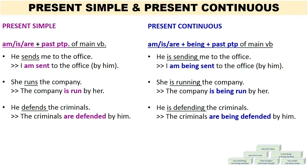Now let's take a look at the present continuous tense. To write the passive voice of the present continuous tense, we use am, or is, or are, plus 'being,' plus the past participle form of the main verb. Note we are still using the verb 'to be.' In this case, we have to use the continuous form of 'be,' which is 'being.'